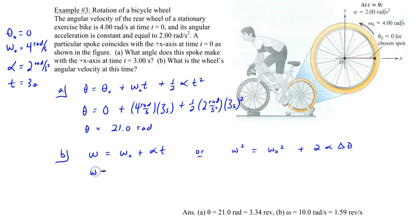So omega at t at three seconds would be equal to the initial angular velocity, which is four rads per second, plus the angular acceleration, two rads per second squared, multiplied by a time period of three seconds. And so that's going to give us two times three is six, plus four, which gives us ten rads per second.